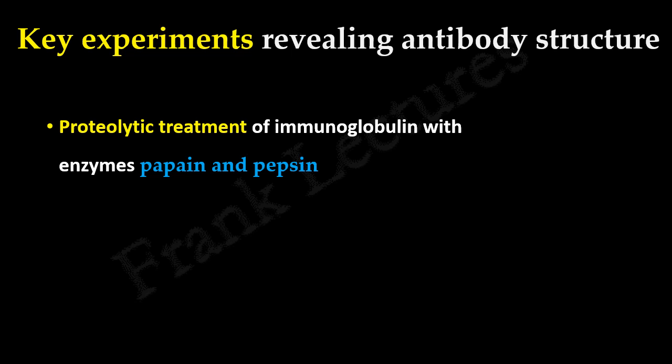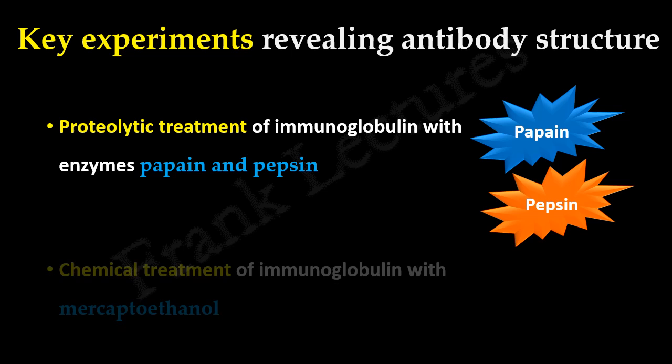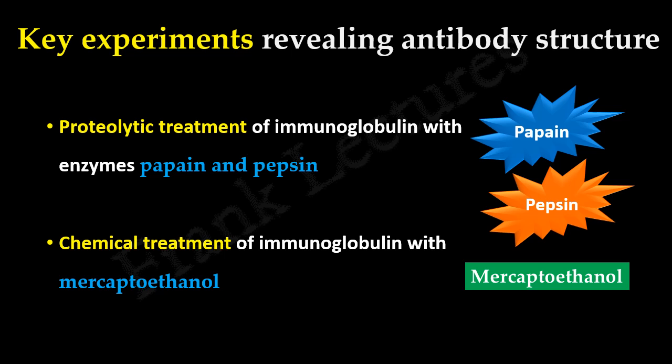These experiments were: proteolytic treatment of immunoglobulin or antibody with enzymes papain and pepsin, and chemical treatment of immunoglobulin with the chemical mercaptoethanol.